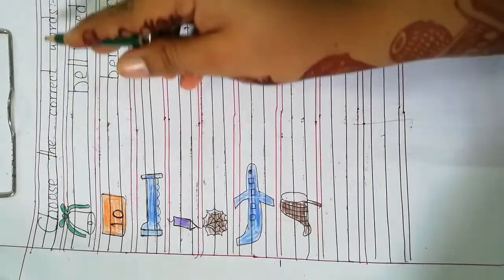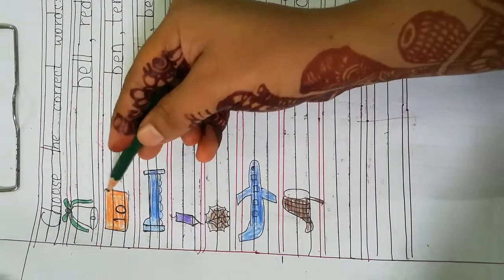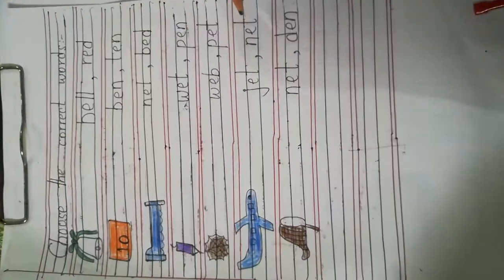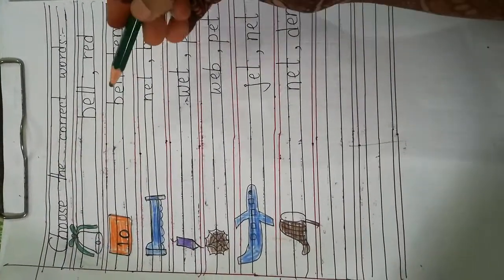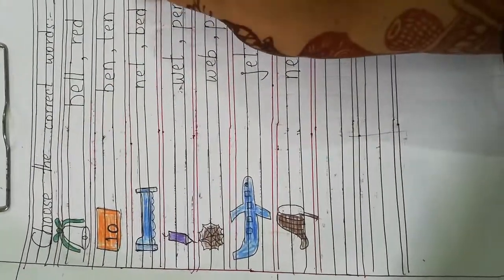Choose the correct words. After identifying these pictures, we will spell these words and after that we will circle the correct words. Okay? So, let's start.